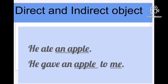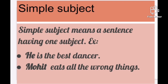Every complete sentence contains two parts: a subject and a predicate. The subject is what or whom the sentence is about, while the predicate tells something about the subject. There are two kinds of subject: the simple subject, also called the head word, which is the main word in the subject, and the compound subject.